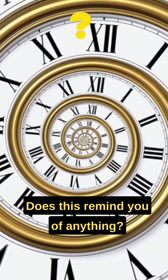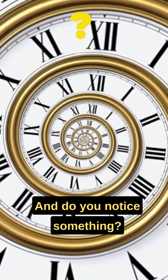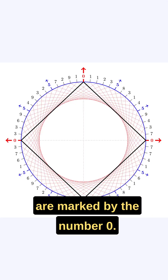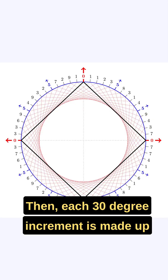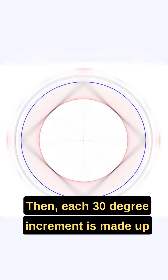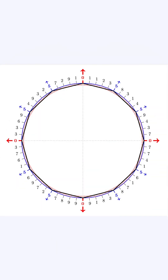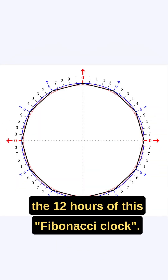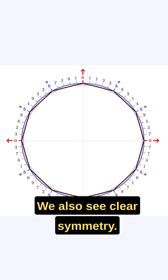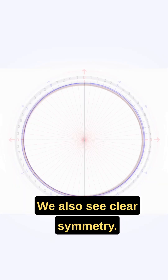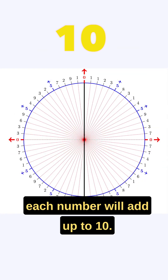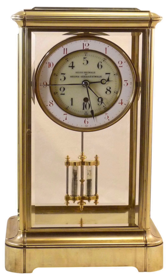Does this remind you of anything? Do you notice something? The cardinal points are marked by the number 0. Then, each 30-degree increment is made up of the number 5 — in other words, the 12 hours of this Fibonacci clock. We also see clear symmetry if we connect opposite numbers: each number will add up to 10.